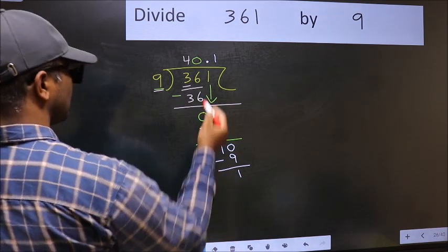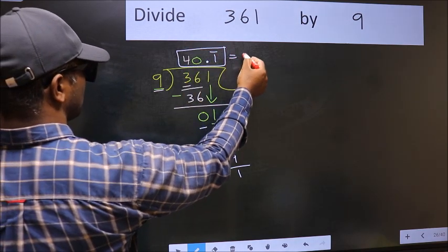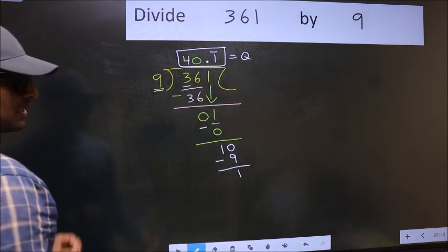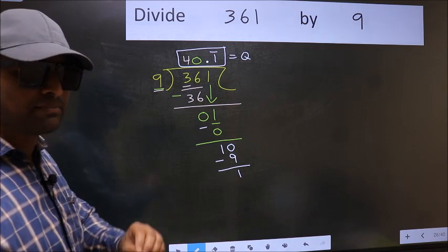That means we get bar on this number. So this is our quotient. Did you understand where the mistake happens? You should not do that mistake.